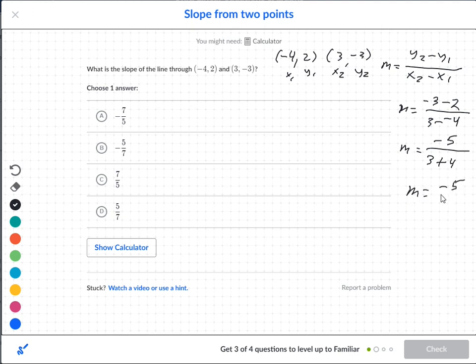Continuing, now we'll just take three plus four and we get seven. So my slope here should be negative five over seven.